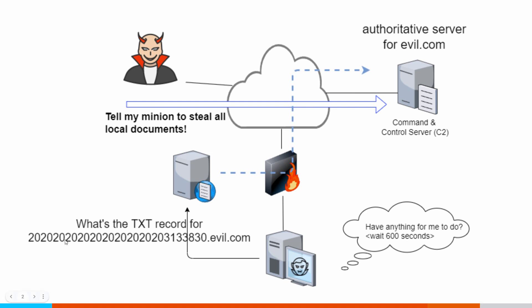Let's say this compromised system tries to check in a minute later by sending the same query. Well, that information is still cached by the DNS server, so the DNS server just hands back the same answer it did before. This thing will repeat the same command even though the attacker might have had something else in the queue. So how does an attacker get around DNS caching? The only way is to do a unique query every single time, so you don't have to worry about things getting stuck in cache. This opens up a point of visibility for us, because it means you're going to see a lot of resources being queried within a remote domain.